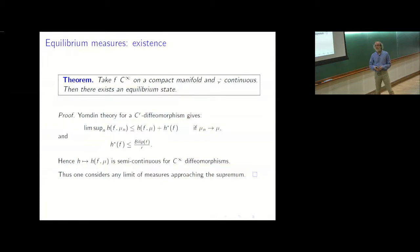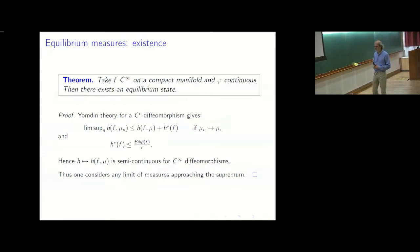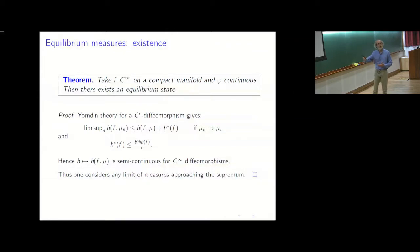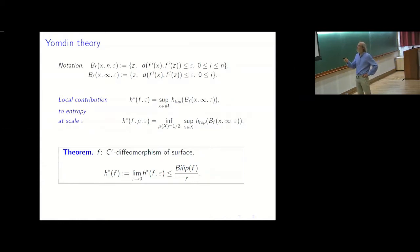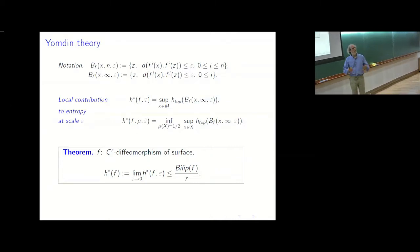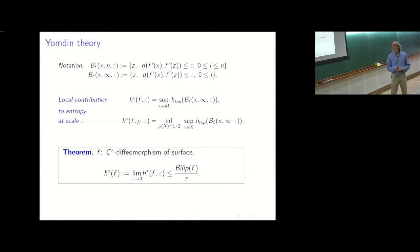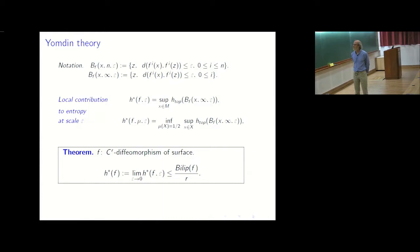Yomdin's theory has been used twice: here for existence, and also before to prove finiteness of the homoclinic classes with large entropy. It is an important tool for us. I want to spend the last part of the lecture explaining Yomdin theory. I will restrict to the case of surfaces, which is much simpler — in fact the proof of Yomdin is an induction over the dimension, and the base case on surfaces is much simpler.